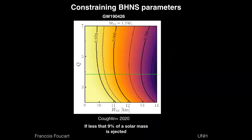Ideally we would want a system where we have a gravitational wave signal and an electromagnetic counterpart. A kilonova would even be better than the gamma-ray burst for this, because then we know that there is disruption of the neutron star, allowing us to put pretty strong constraints on the parameters of the system that greatly improve what we can do with just gravitational waves. If there's a kilonova, we can also get some information about the amount of mass that was ejected — maybe not very accurately — which can allow us to reduce error bars on the parameters of the system.